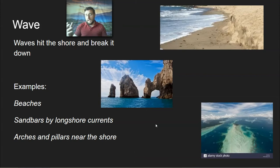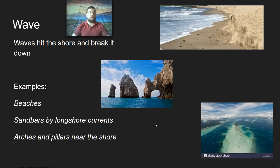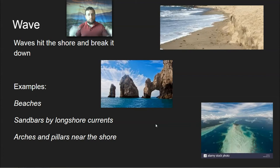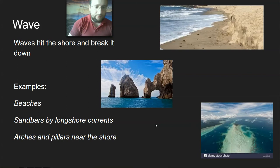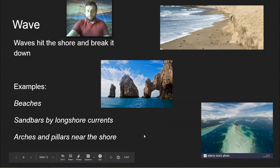Waves carve through hard rock and turn it into sand and sediments, although a lot of beach sand actually comes from deposition by nearby rivers, then carried away by longshore currents to form beaches. There are also beaches that form due to waves breaking down rock. Near rocky shorelines, waves and currents also create arches and pillars. It starts with an arch, and eventually the arch collapses and forms a pillar — so every pillar you see used to be a connected arch at some point.